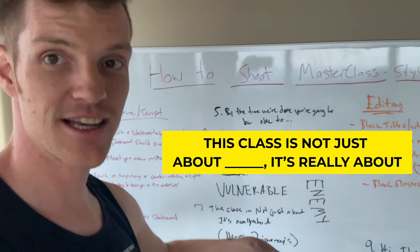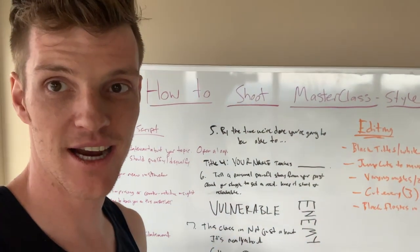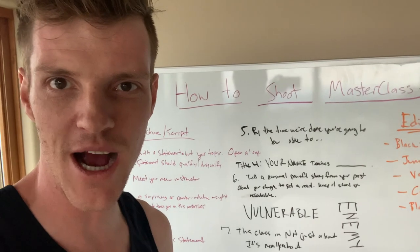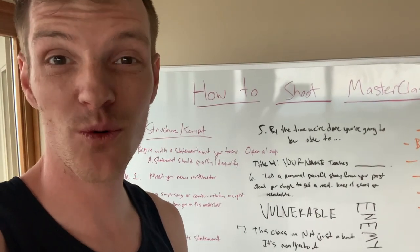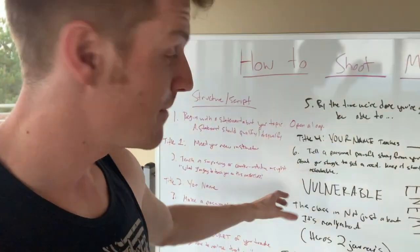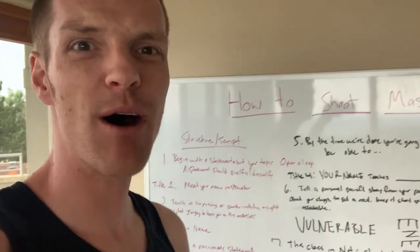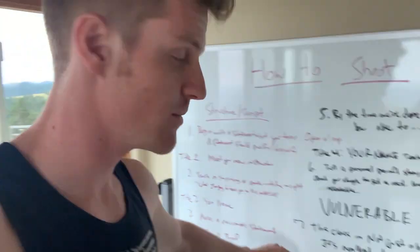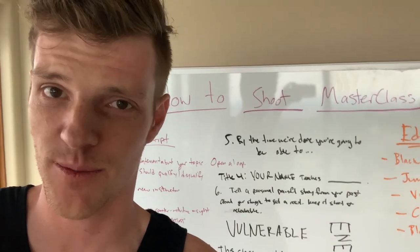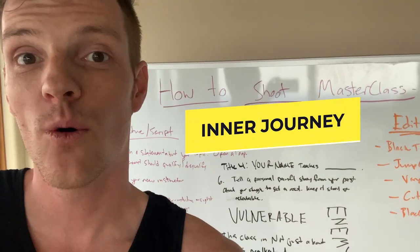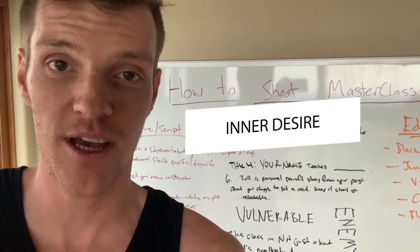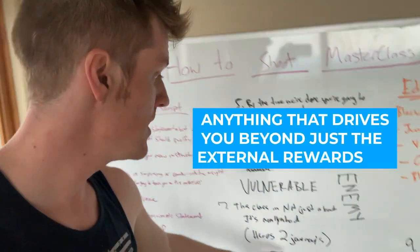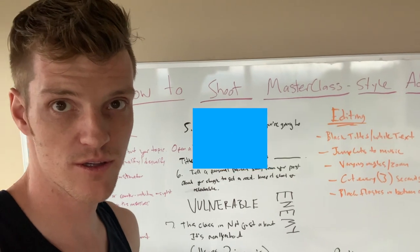Next, go a level deeper: 'This class is not just about blank — it's really about blank.' For example, it's not just about making money online; it's really about becoming the person you were meant to be. Use the hero's two journeys — the external tangible goal and the internal desire: the respect of your family, proving something to yourself, setting an example for your children. Anything that drives you beyond external rewards.